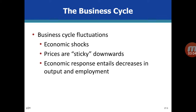Prices are sticky downwards, meaning when the economy faces a downturn there is no flexibility for prices to fall. When aggregate demand is falling and firms cannot decrease prices — because they have to cover the cost of production — they end up selling lower units of output. Sales fall, output falls, GDP falls, and overall unemployment increases. The economic response entails a decrease in output and employment.